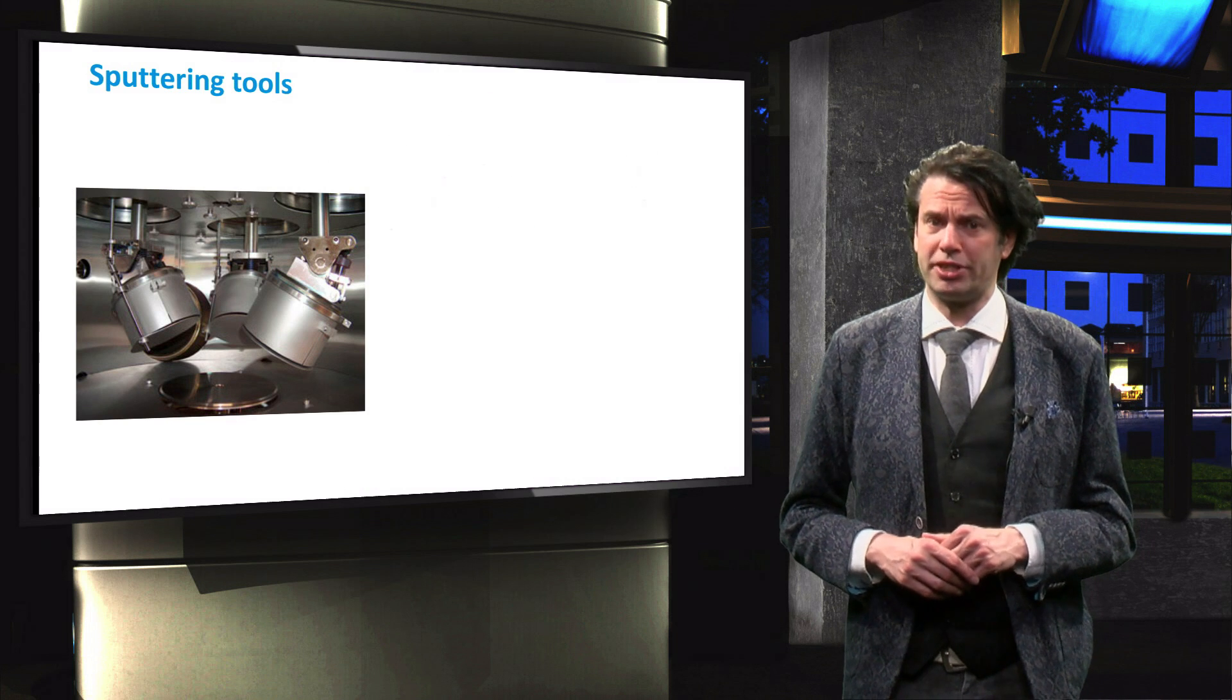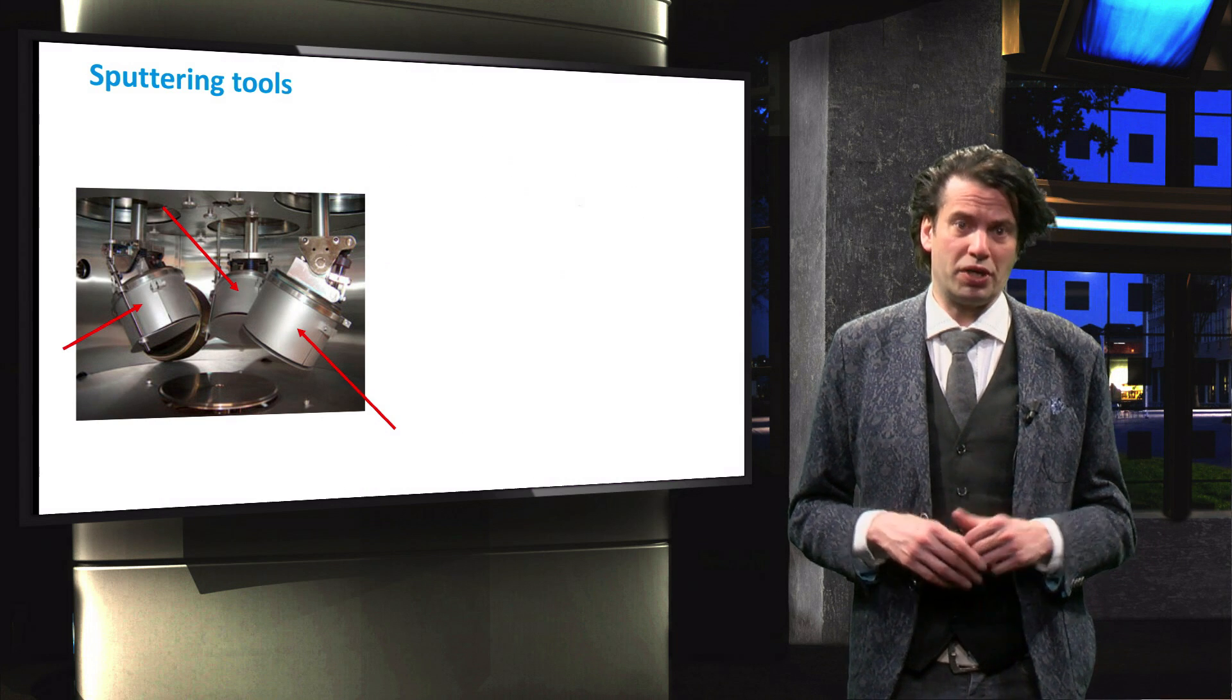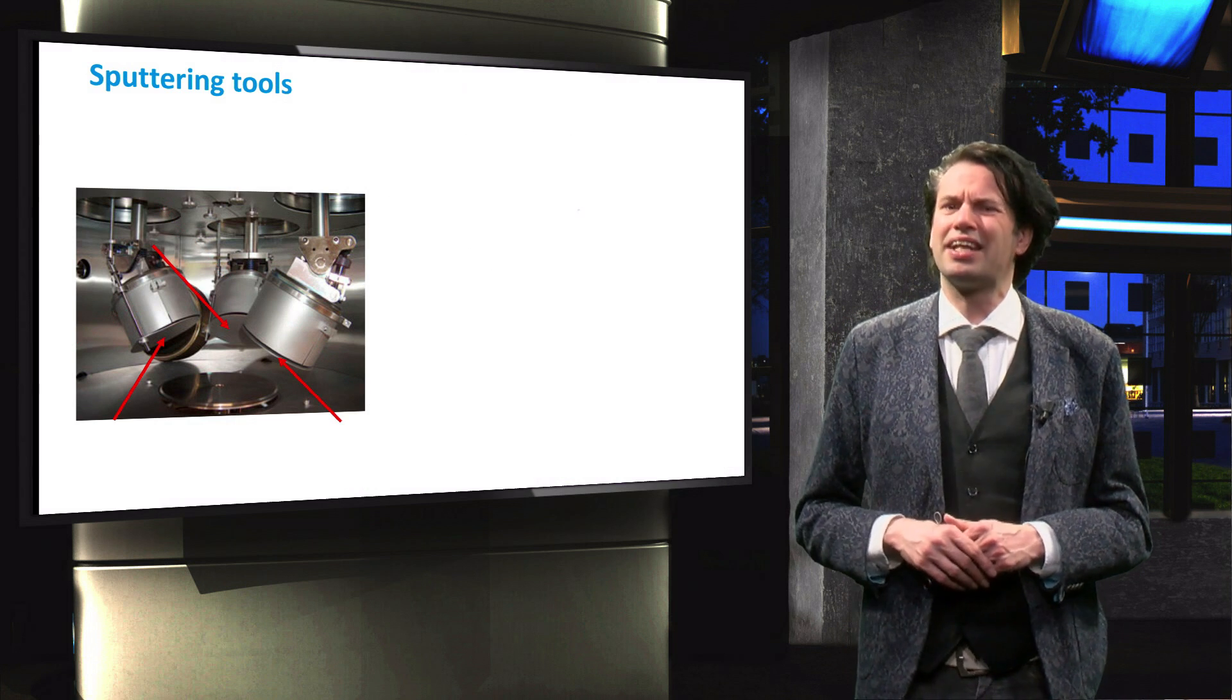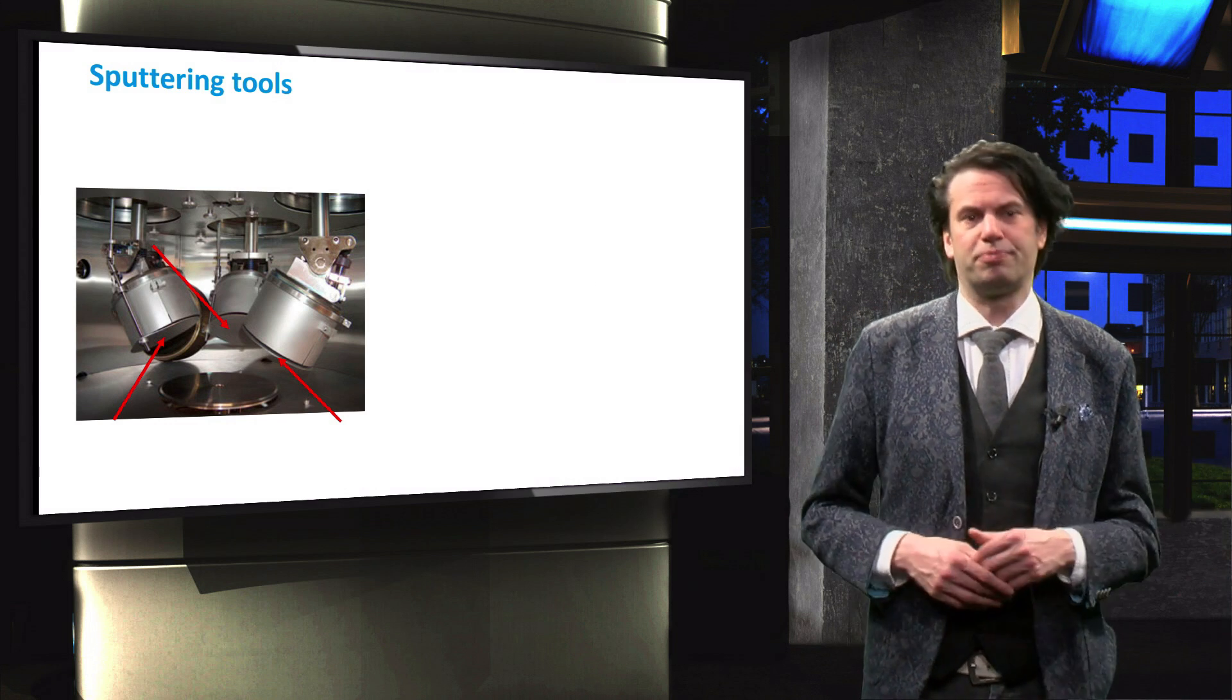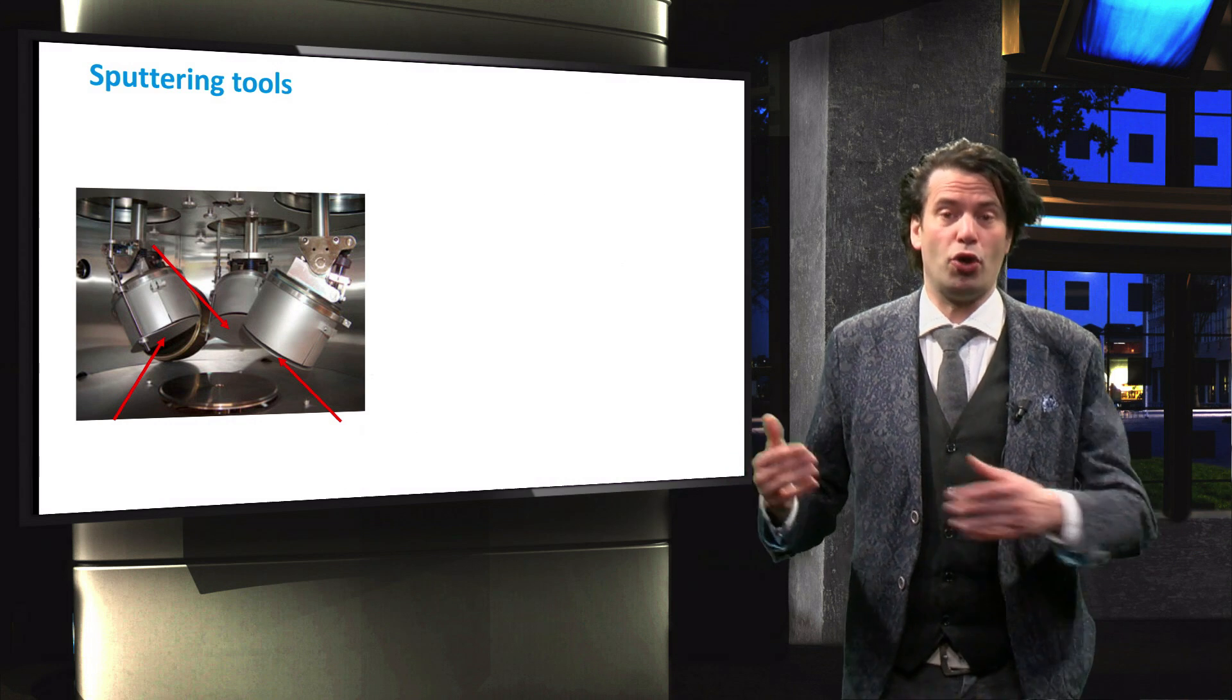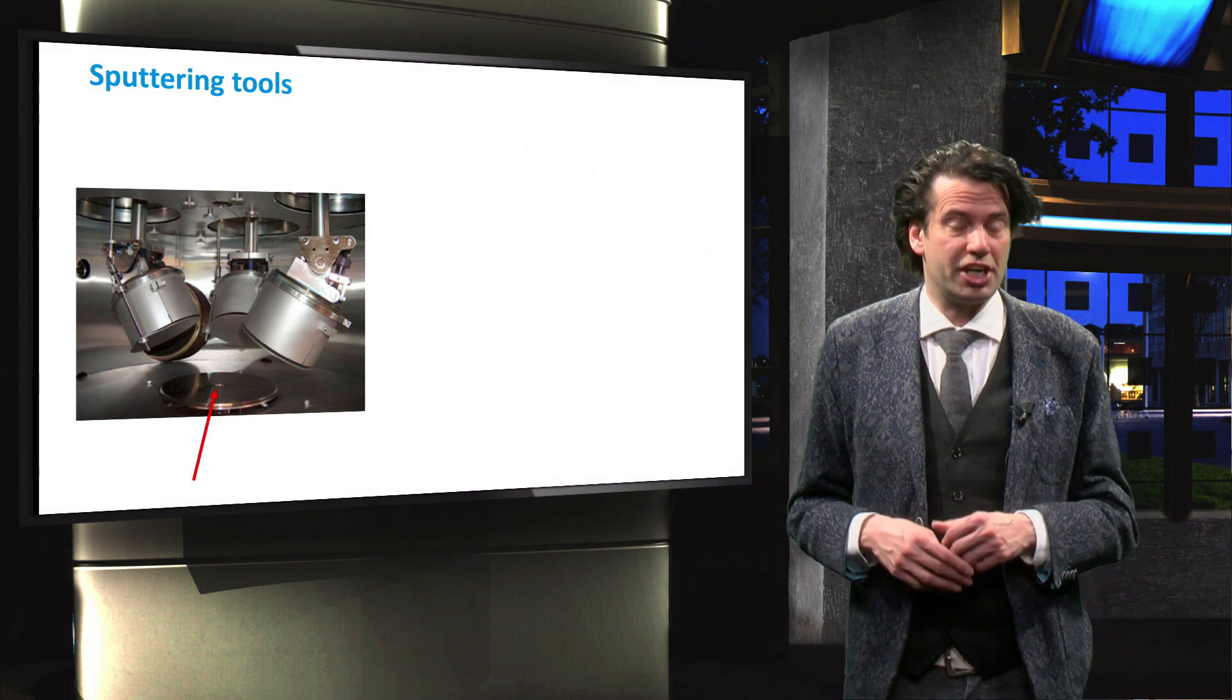This picture shows the vacuum chamber of a sputtering tool. This particular device has three separate targets. We can't actually see the targets themselves because they are closed with the shutter. With this tool, we can select which target we want to use to deposit a film on our substrate. For co-sputtering, we can use multiple targets at once to create a mixed material on our substrate, located on the bottom. Co-sputtering is one of the techniques used for CIGS production.